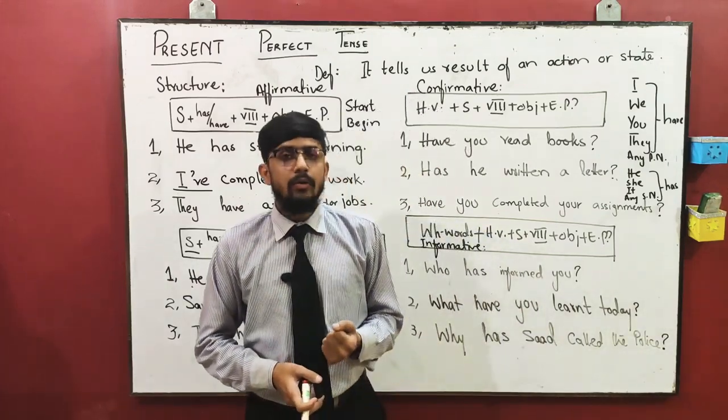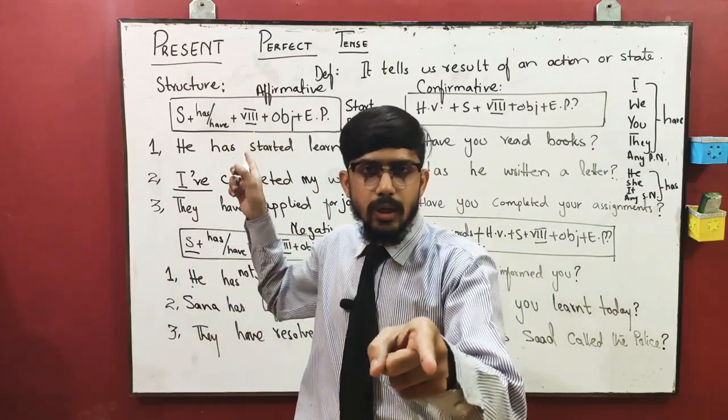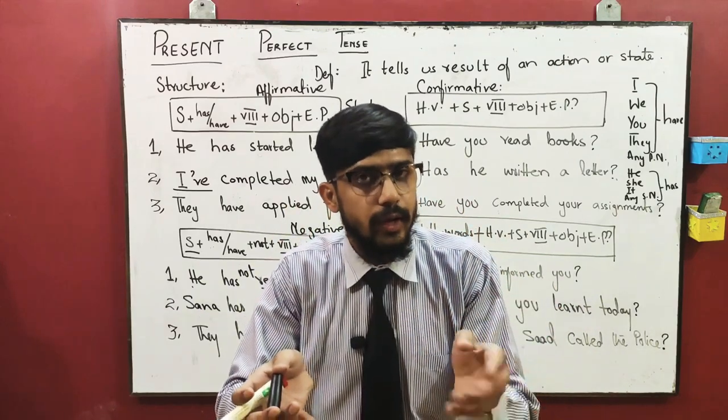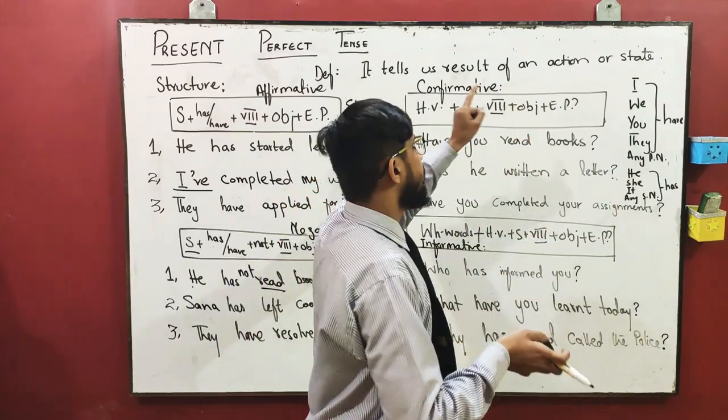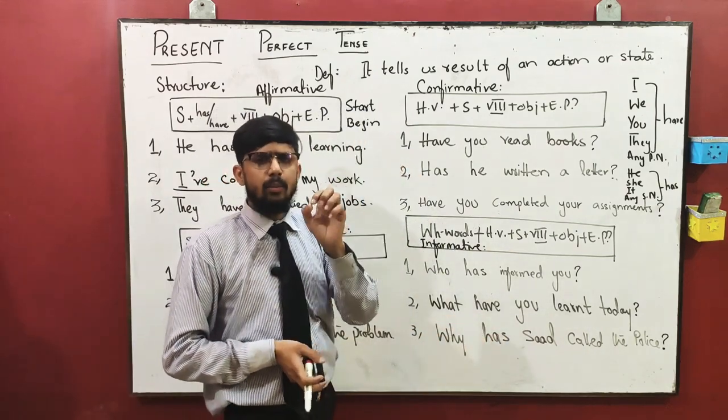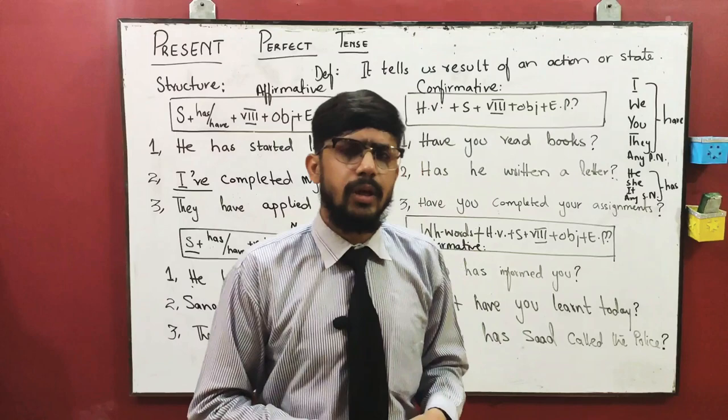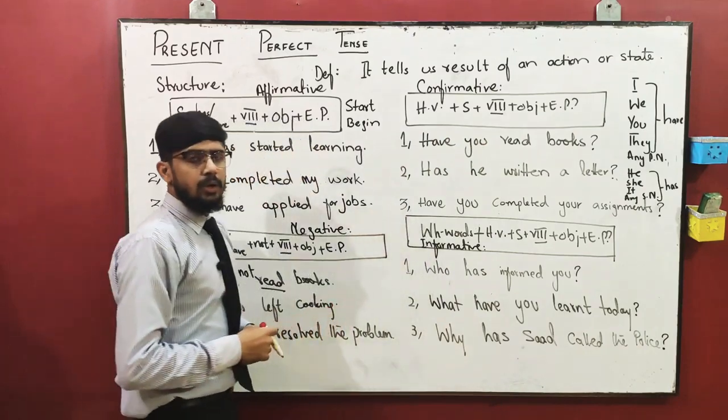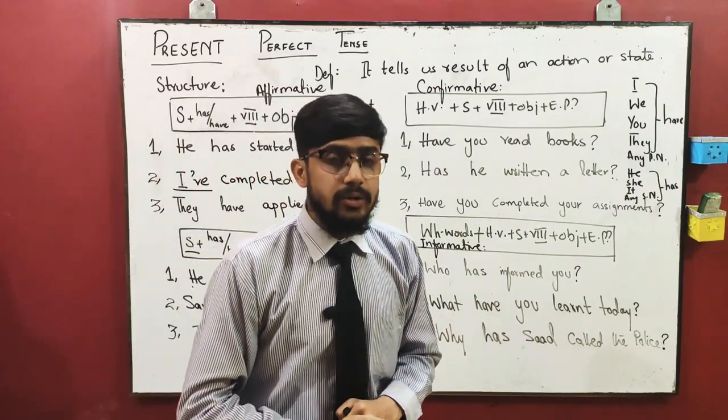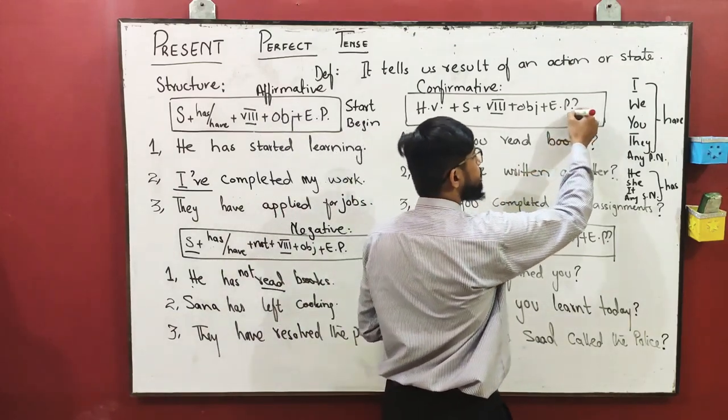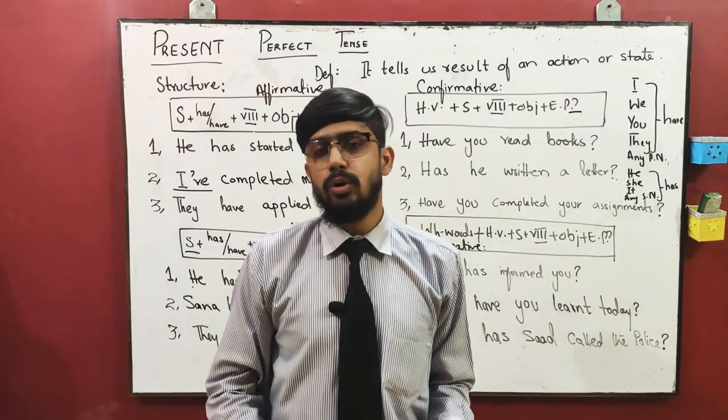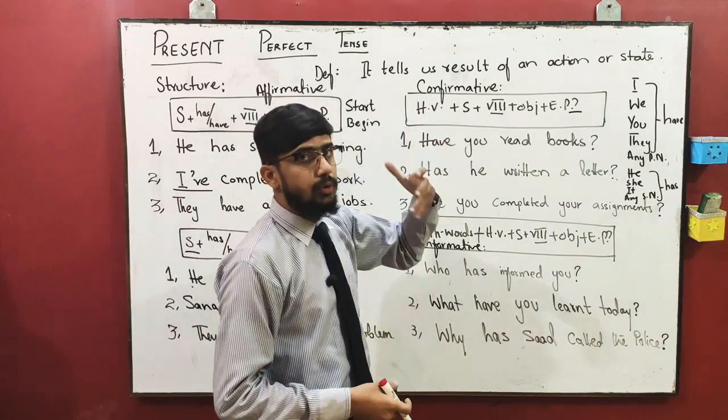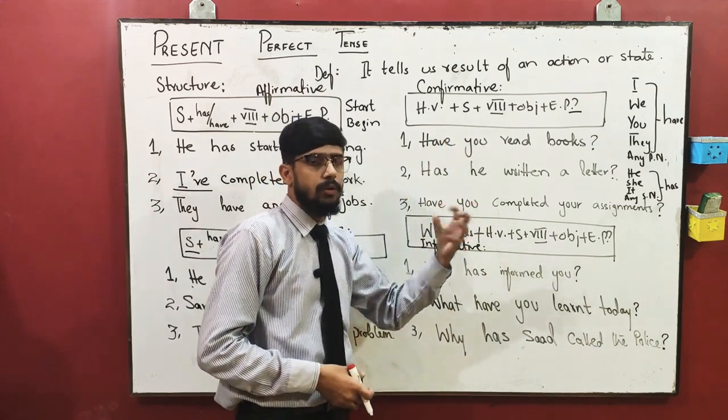For example: kya aap meri baat samajh chuke hain? Kya aapne khana kha liya hai? That is called confirmative sentence. Making confirmative is very easy. We discussed in previous lectures that you simply put helping verb in place of subject and subject in place of helping verb. Then your confirmative sentence is made. But at the end you must add a question mark. The formula is: has/have plus subject plus third form of verb plus object plus EP.